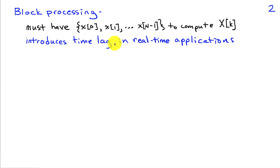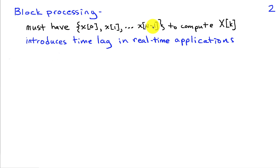Computing one discrete Fourier transform coefficient requires all the samples in the block, so we have to accumulate this data, which introduces a time lag in a real-time application. This is not much of a concern when data is stored, since we can access all the samples at once. But if N is large and we have to wait to collect all that data before processing, it can be a factor in whether this approach is wise.